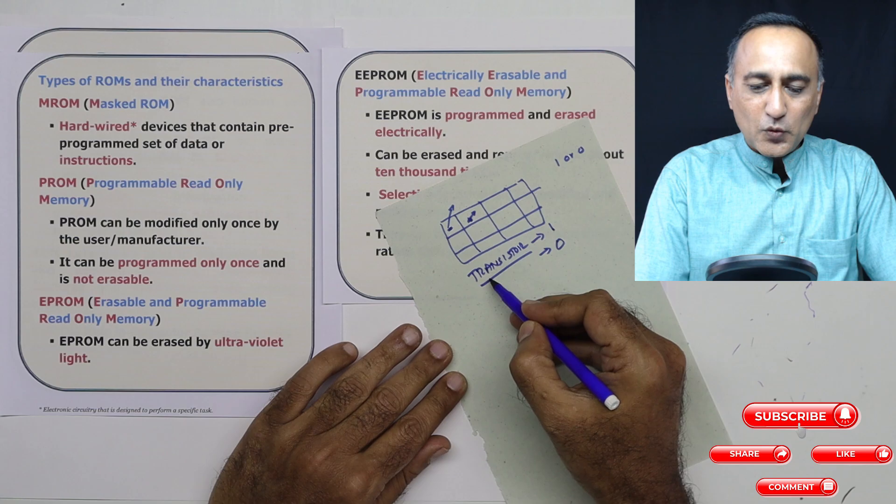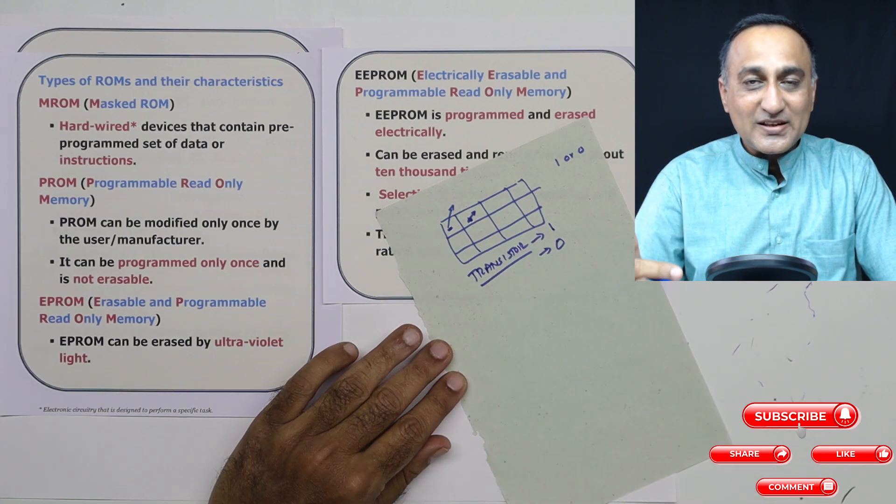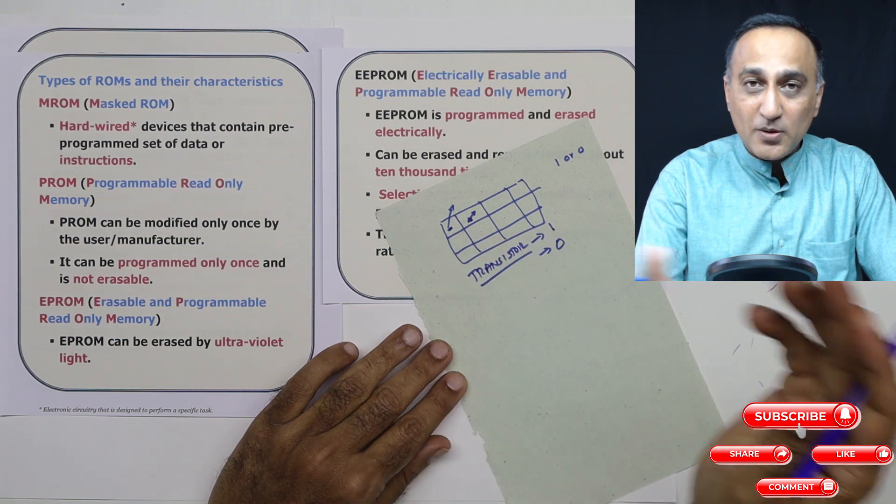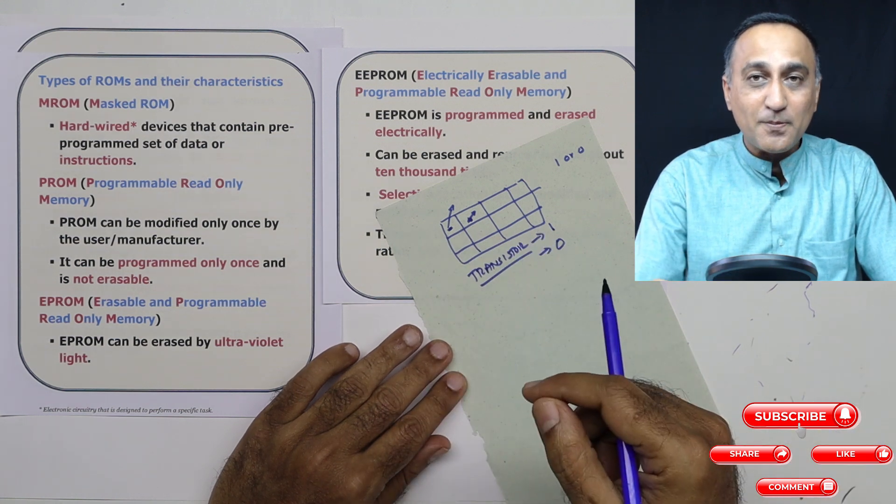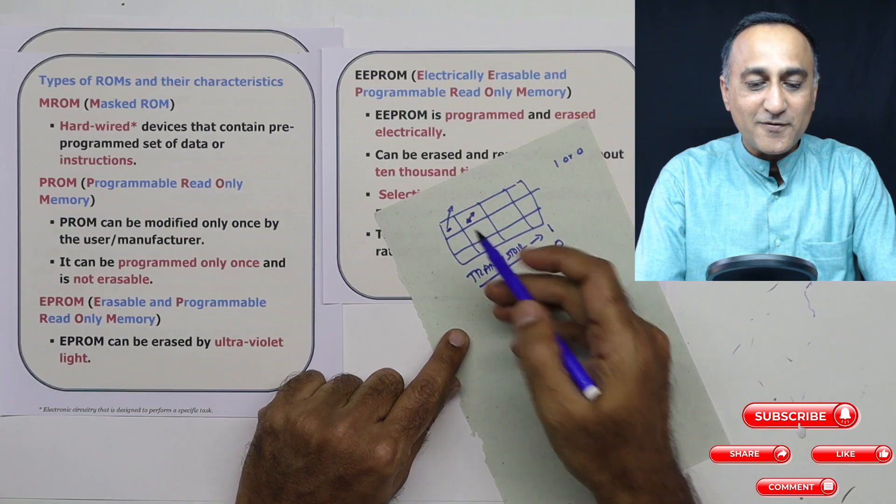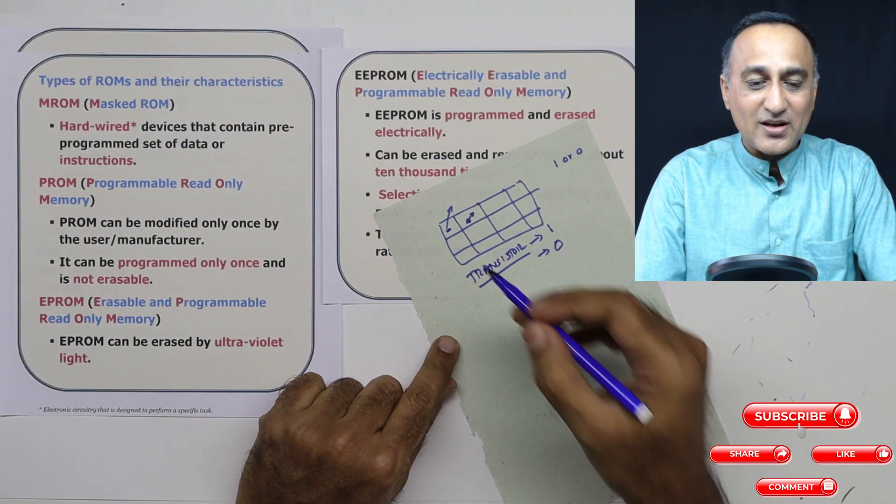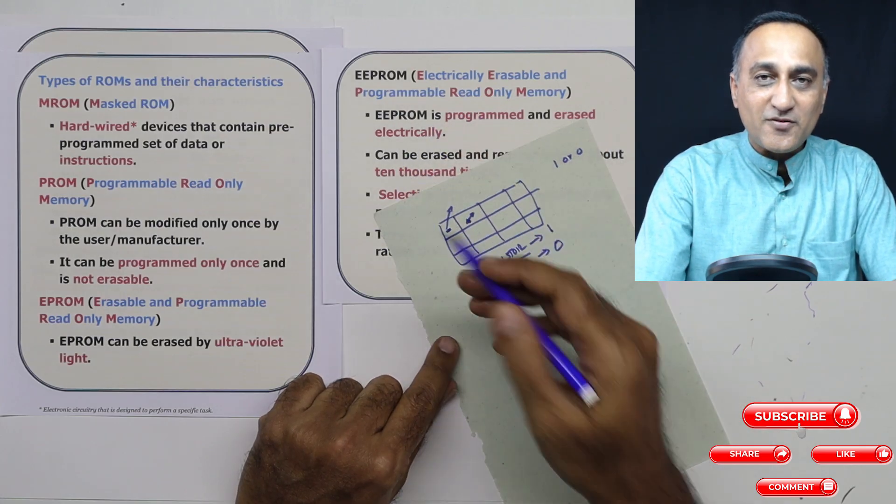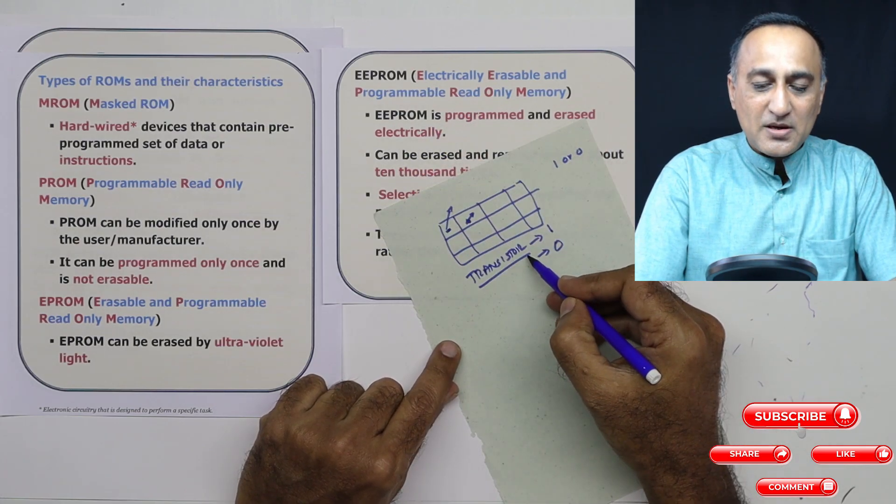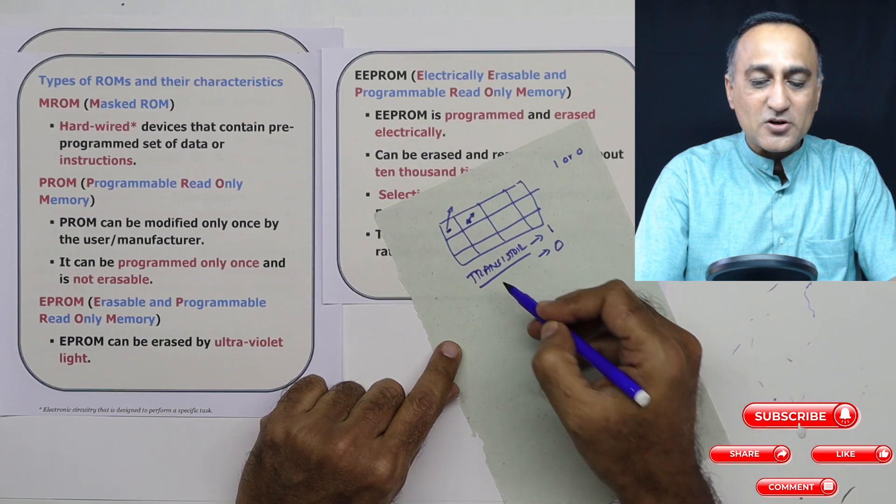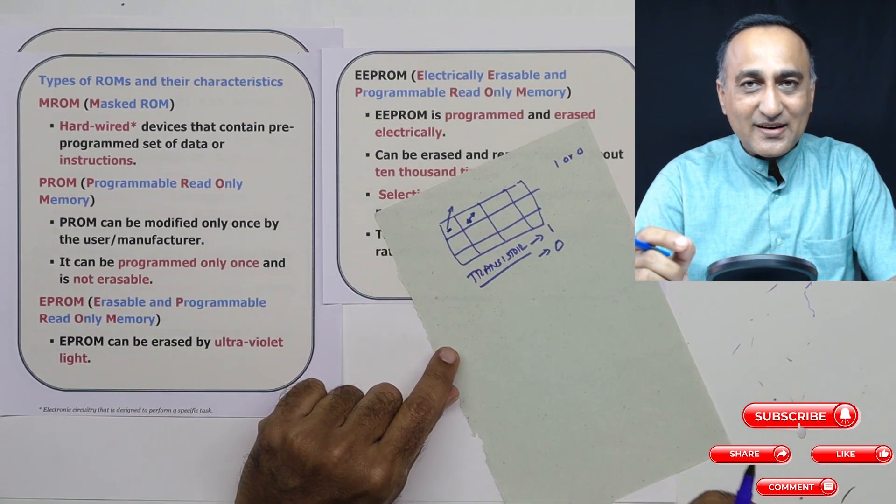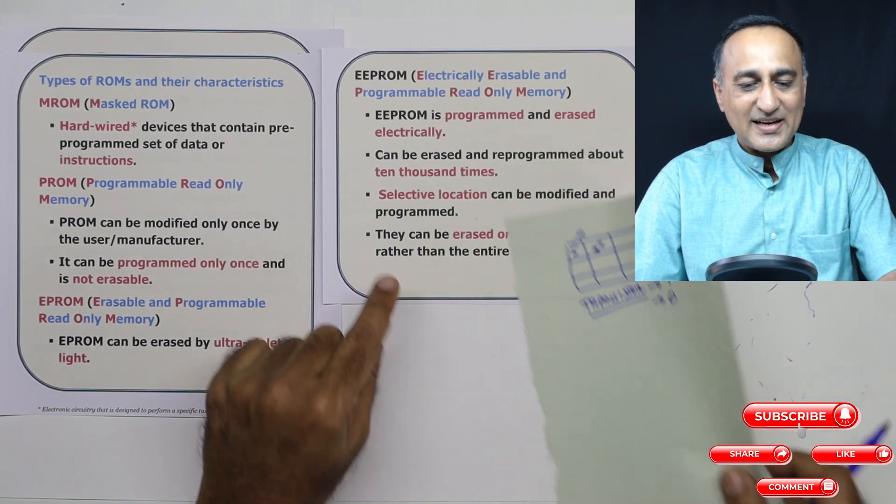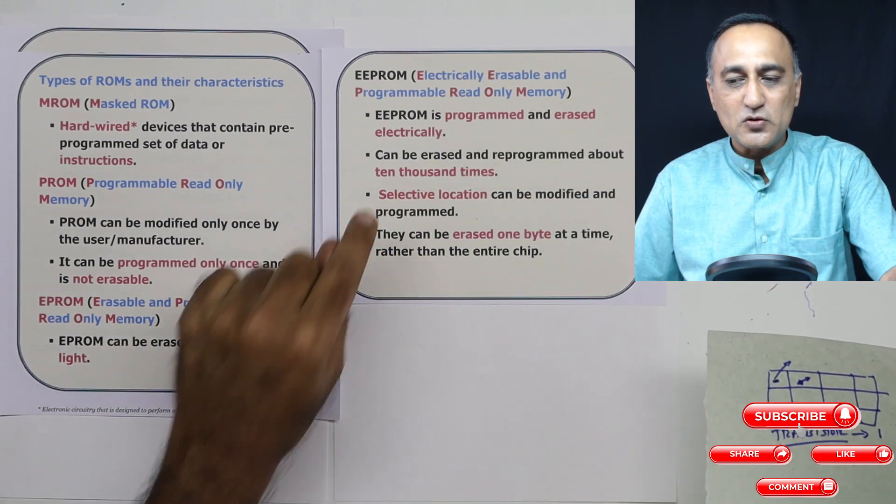But with the fuse, once you blow out the fuse, it cannot be brought back. That's why in a PROM you use the fuse logic, whereas in EPROMs and EEPROMs you use the transistor to achieve the programming by being able to store ones and zeros, because the transistor through some electrical and ultraviolet signals can be made one and zero. That's the reason how you can program these two fellows.